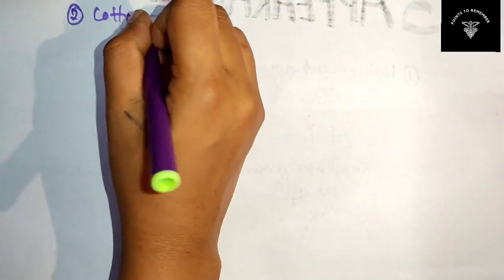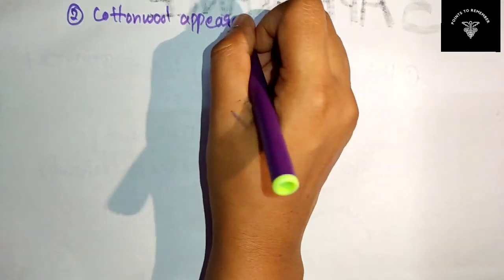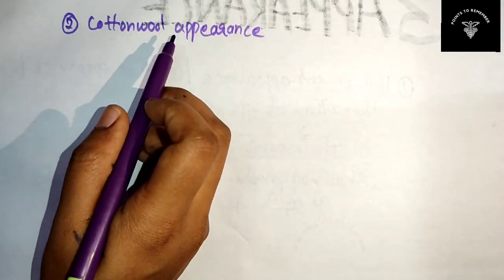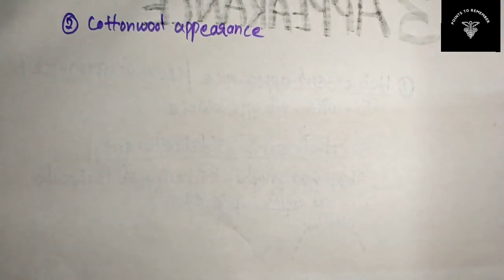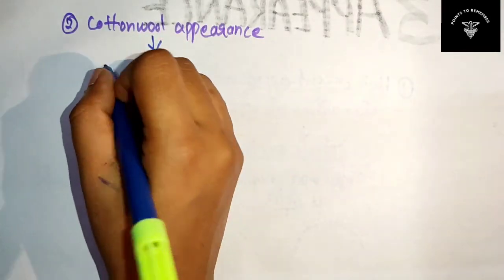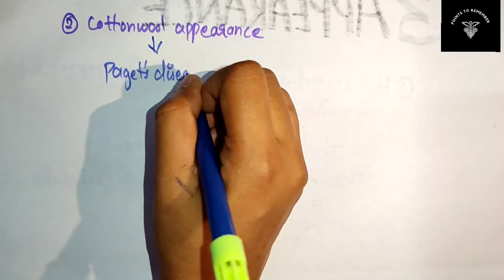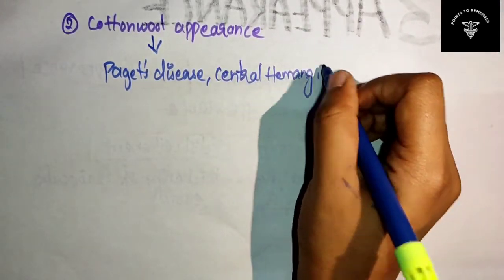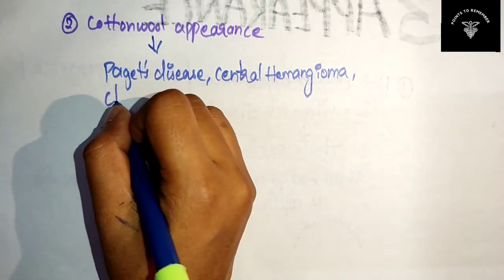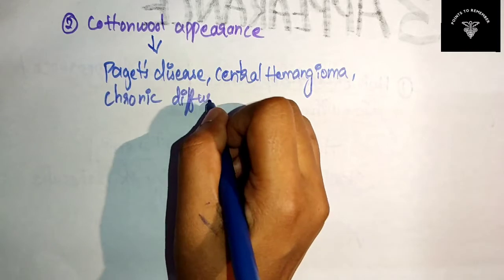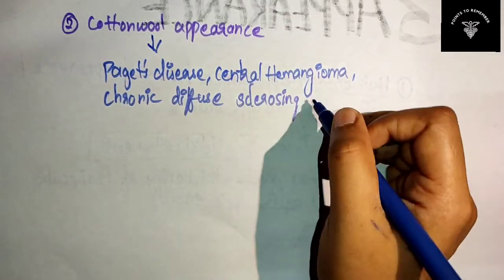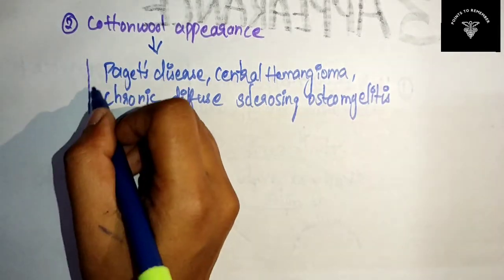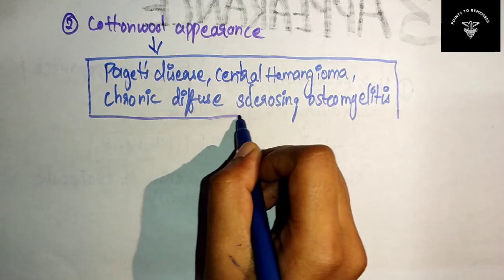The second important appearance is the cotton wool appearance. This is seen in Paget's disease, and also in central hemangioma and chronic diffuse sclerosing osteomyelitis.